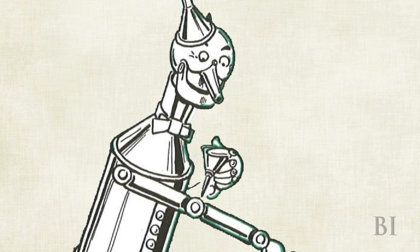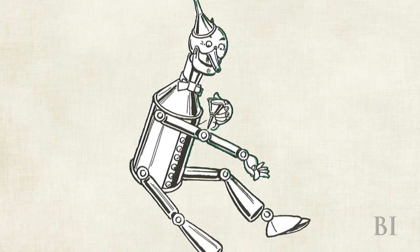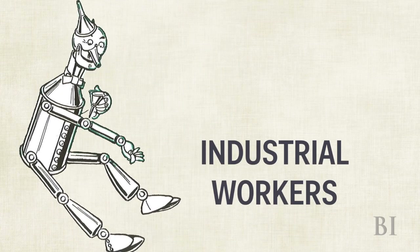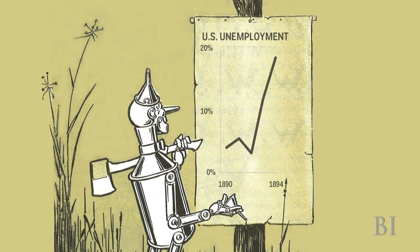The farmers weren't the only group suffering and seeking an end to the gold standard. Industrial workers are represented by the Tin Man. His joints are rusted and he can no longer work, much like the 18% of Americans that were unemployed in 1894.